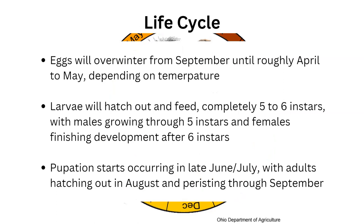Things to note: the larvae, when they hatch, will go through five to six instars. Males don't need as much energy as the females, so they'll only go through five, meaning they're going to molt or shed their exoskeleton five times. Females, however, need more energy so they can develop eggs — so they're going to go through that sixth instar, that sixth shedding period, so they can store up energy and be able to reproduce successfully. That pupation is going to start in late June, early July, and the adults are going to hatch out in August and persist through September. They will not survive the cold — they don't have any energy left after that.